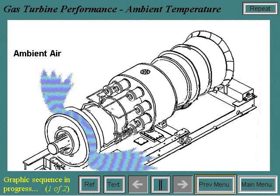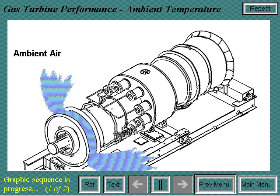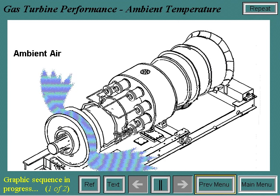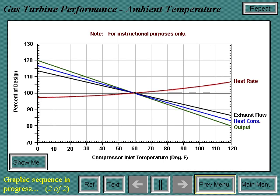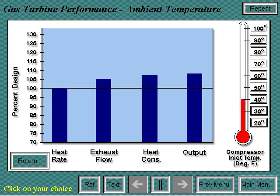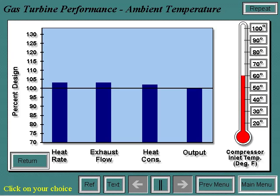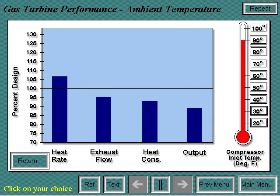Since the gas turbine is an ambient air-breathing machine, its performance will be changed by anything affecting the mass flow of the air intake to the compressor. The most obvious are changes in the reference conditions of 59 degrees Fahrenheit and 14.7 PSIA. Depending on the unit's cycle parameters and component efficiencies, ambient temperature will affect the air mass flow, which in turn will change output, heat consumption, heat rate, and exhaust flow.